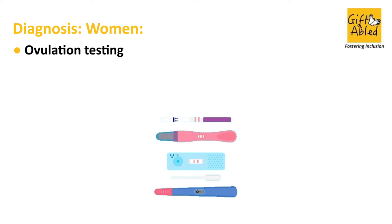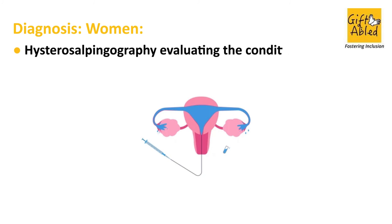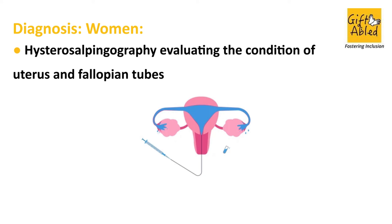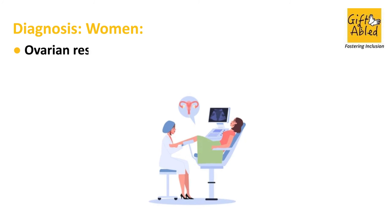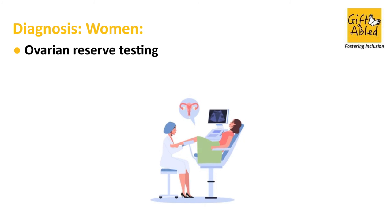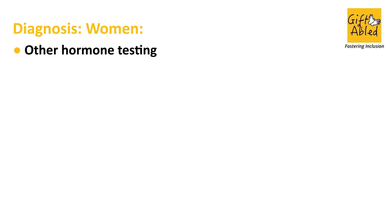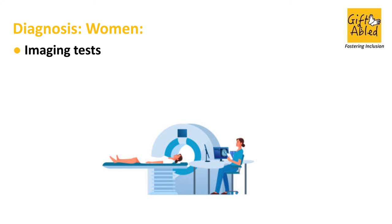Diagnosis in women includes: ovulation testing, hysterosalpingography to evaluate the condition of the uterus and fallopian tubes, ovarian reserve testing, other hormone testing, and imaging tests.